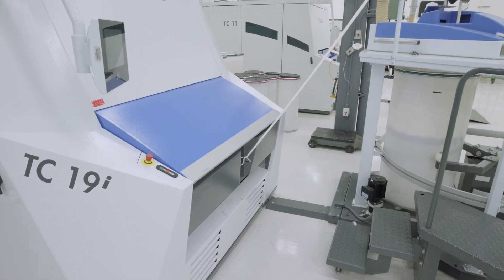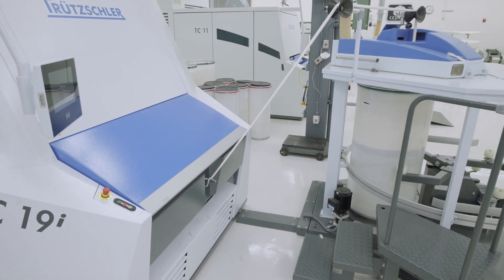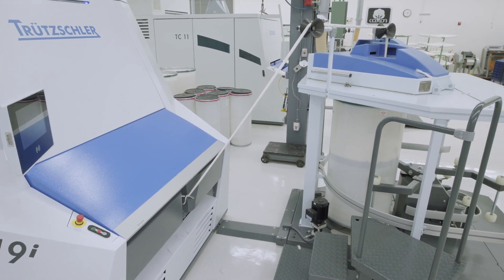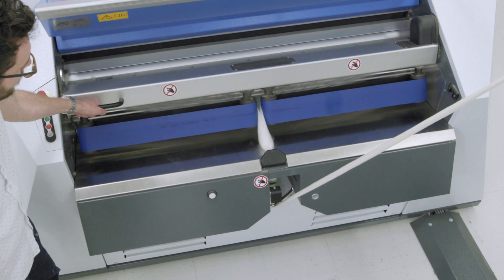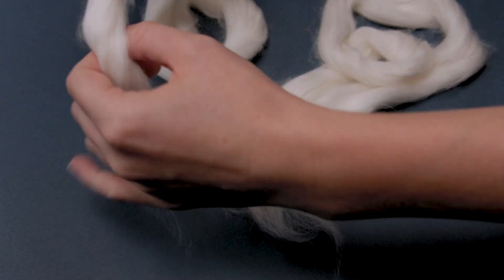Carding is the foundation process of yarn manufacturing. It is at the carding stage that the previously loose, unoriented cotton fiber first takes on a textile form, sliver.